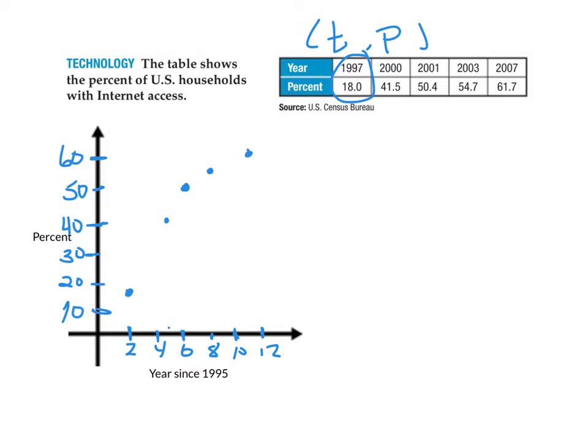Now, when we look at our five data points, it looks pretty linear, but not exactly linear. And that's why we want to be able to draw a line of fit. A line of fit is going to be a line that kind of runs through the middle of all of our data.